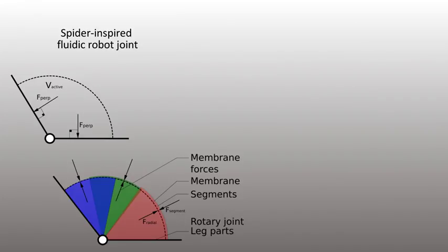These segments are hinged at the center and radially acting forces are redirected without affecting the output torque. This leads to a very efficient conversion of chamber pressure into joint extension torque.